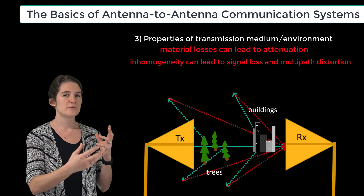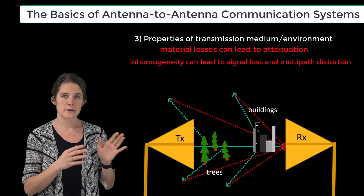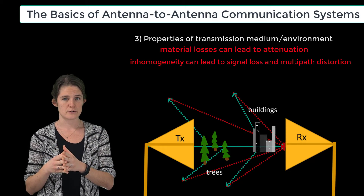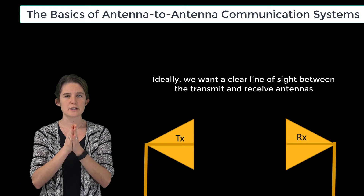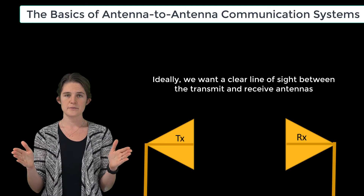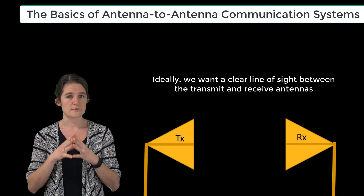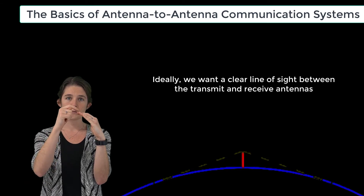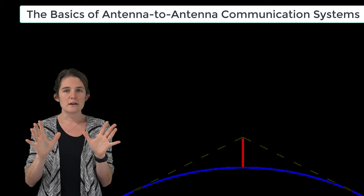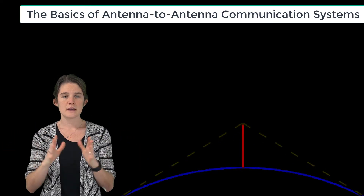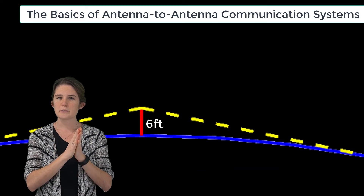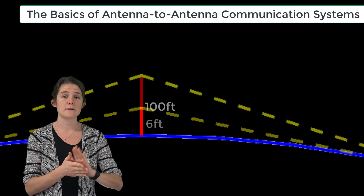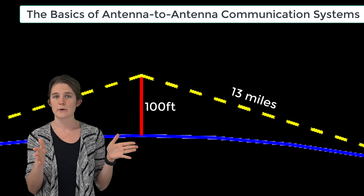Reflected signals can bounce around and ultimately arrive at the receive antenna after traveling a longer path, arriving slightly after the direct signal — like an echo. These layers of echoed signals can overlap with and distort the original signal in what is known as multipath distortion. The most ideal communication scenario is therefore one with a clear line of sight between the transmit and receive antennas. Because of the curvature of the earth, line-of-sight transmission distance is limited by antenna height. For example, an antenna at 6 feet above ground transmits to a maximum of about 3 miles, while one atop a 100-foot tower reaches about 13 miles.